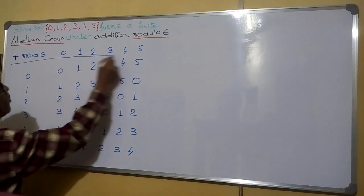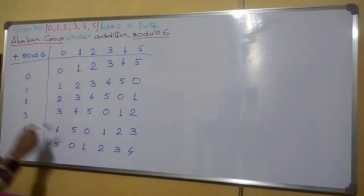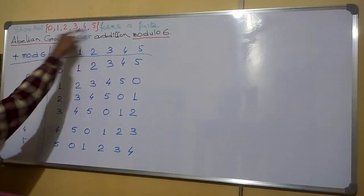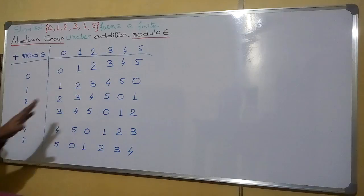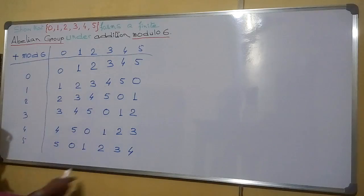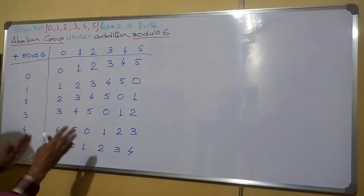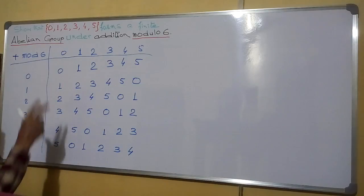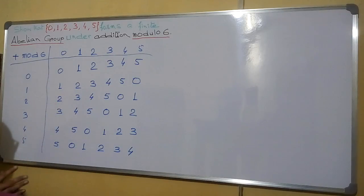You can see this composition table — all the elements belong to this set. So we can say this addition modulo operation between any two numbers gives a number which belongs to this set. Therefore, this satisfies the binary operation property. The first part is done.